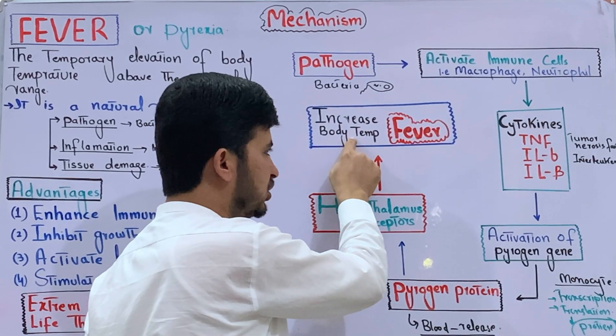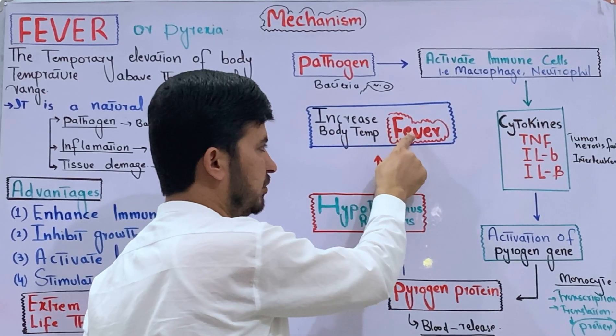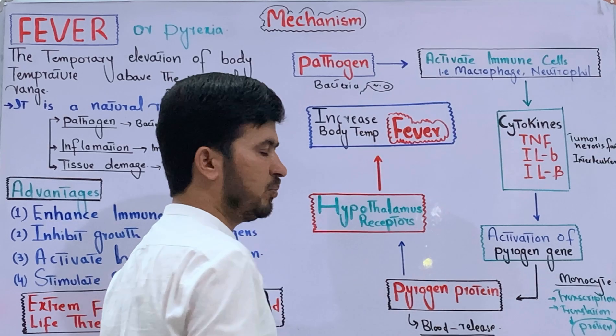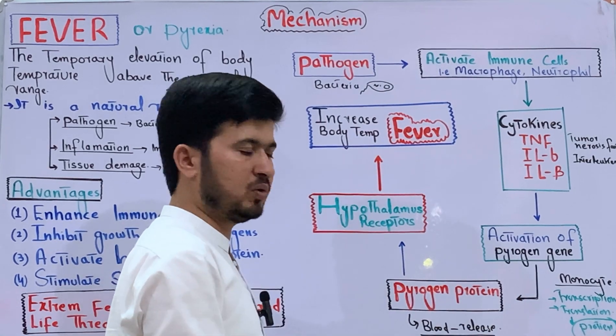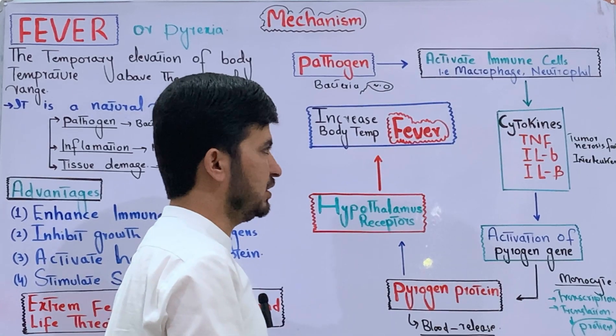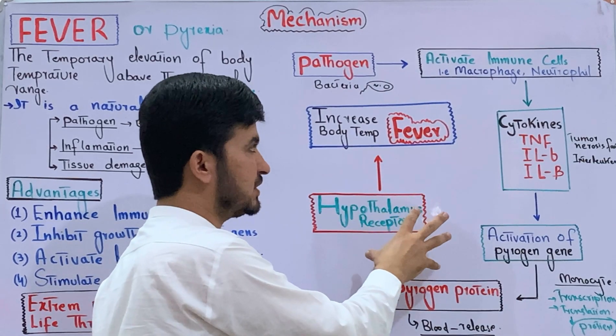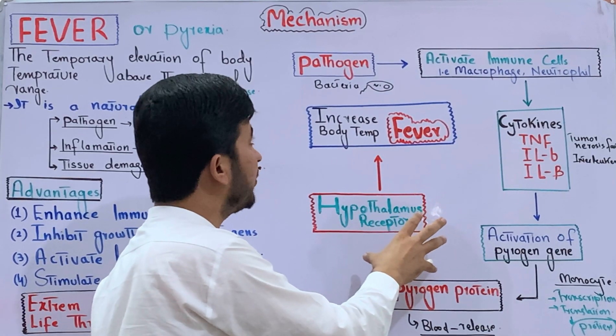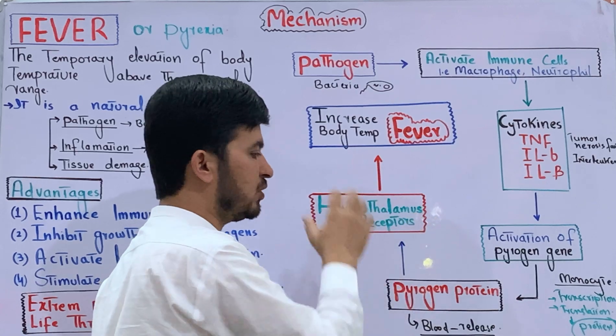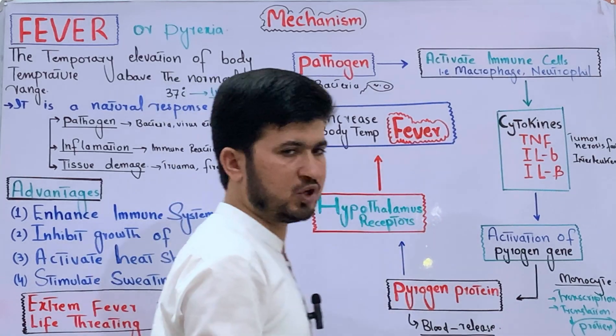When the body temperature increases as a result of hypothalamus activation, the condition is called Pyrexia. This is the mechanism by which Pyrexia is developed.